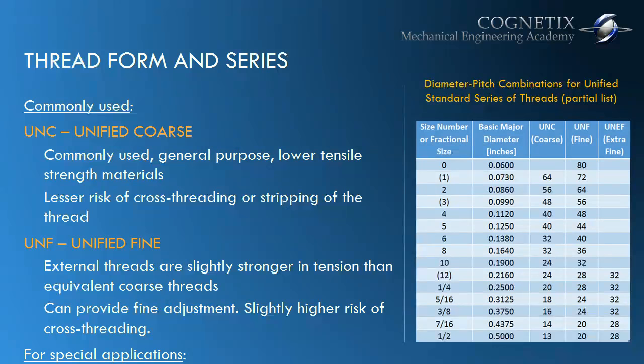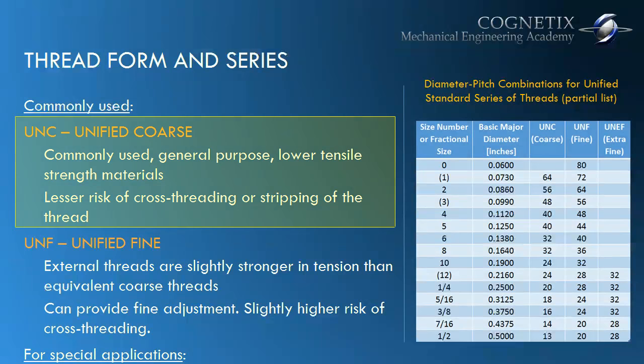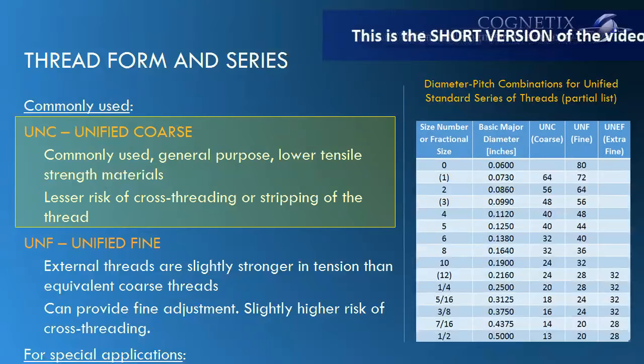Briefly, let's discuss when you would choose one or the other. Unified Coarse thread is commonly used, it's general purpose, and tends to be used in lower tensile strength materials such as aluminum and many others. There is less of a risk of cross threading or stripping these threads because their pitch is smaller — each thread is spaced apart more from the next one, so less risk of cross threading or stripping.